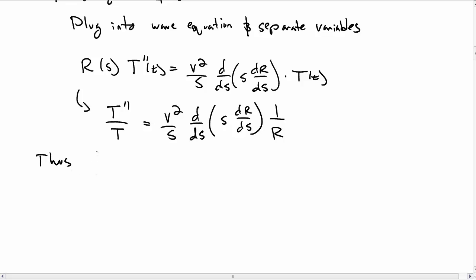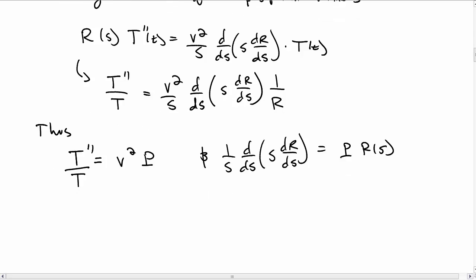That means that both of these sides must be a constant. So t double prime over t must be some constant, let's call that v squared times p. And the right-hand side must also be a constant, namely one over s d by ds of s dr ds must be some constant times big R of s.